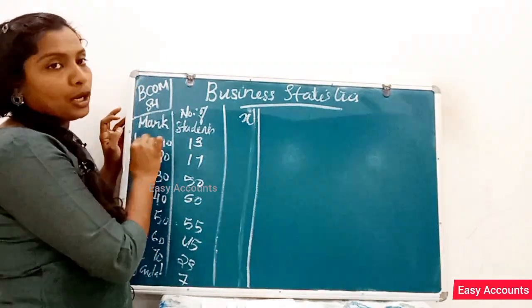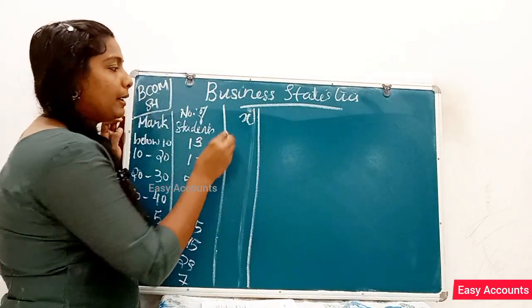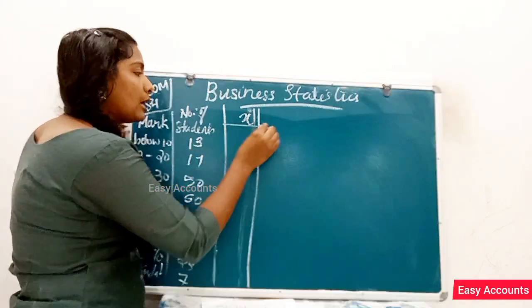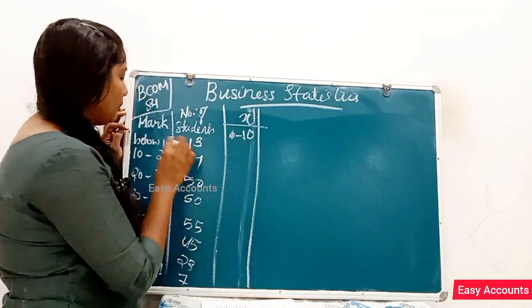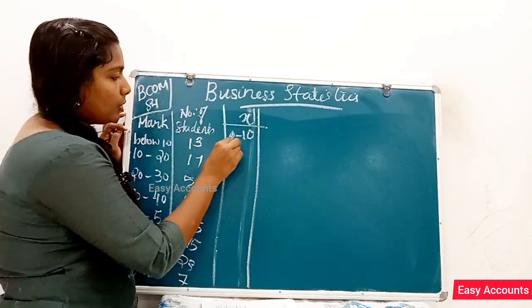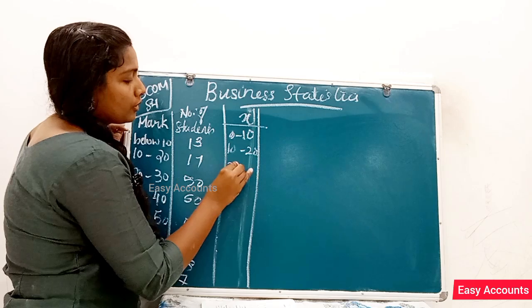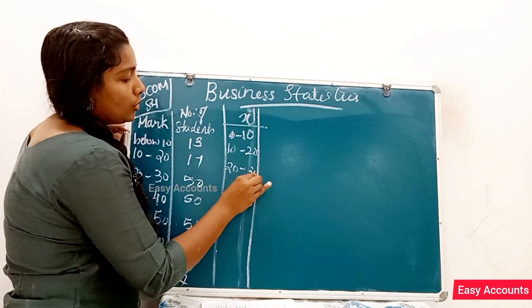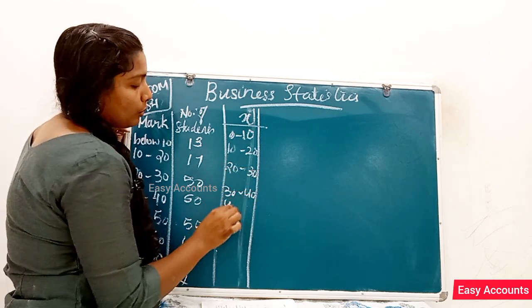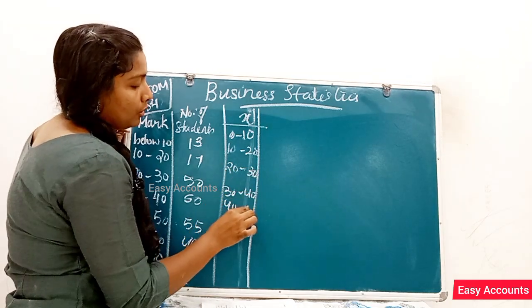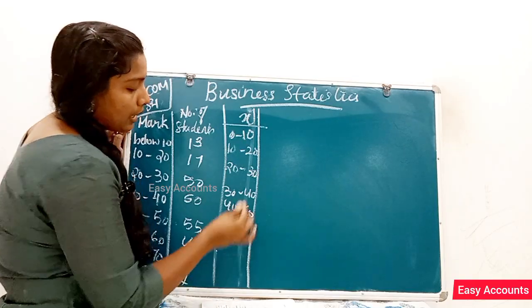Below 10: 10, 15. Then 10 to 20, 20 to 30, 30 to 40, 40 to 50, 50 to 60. These are the class intervals being set up.